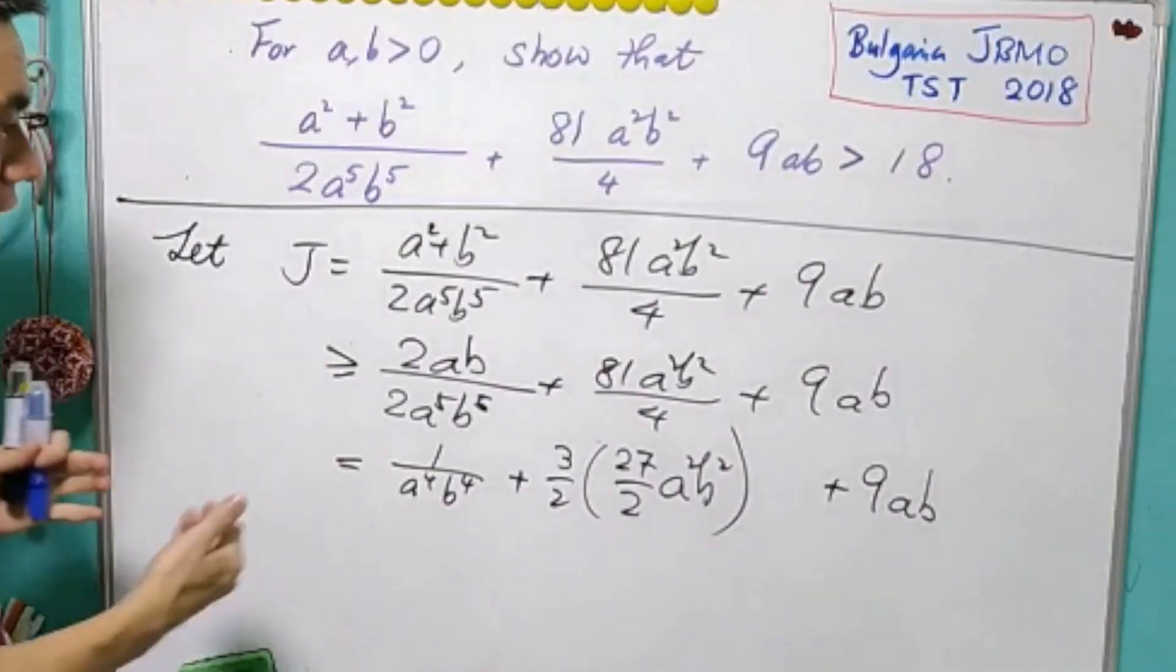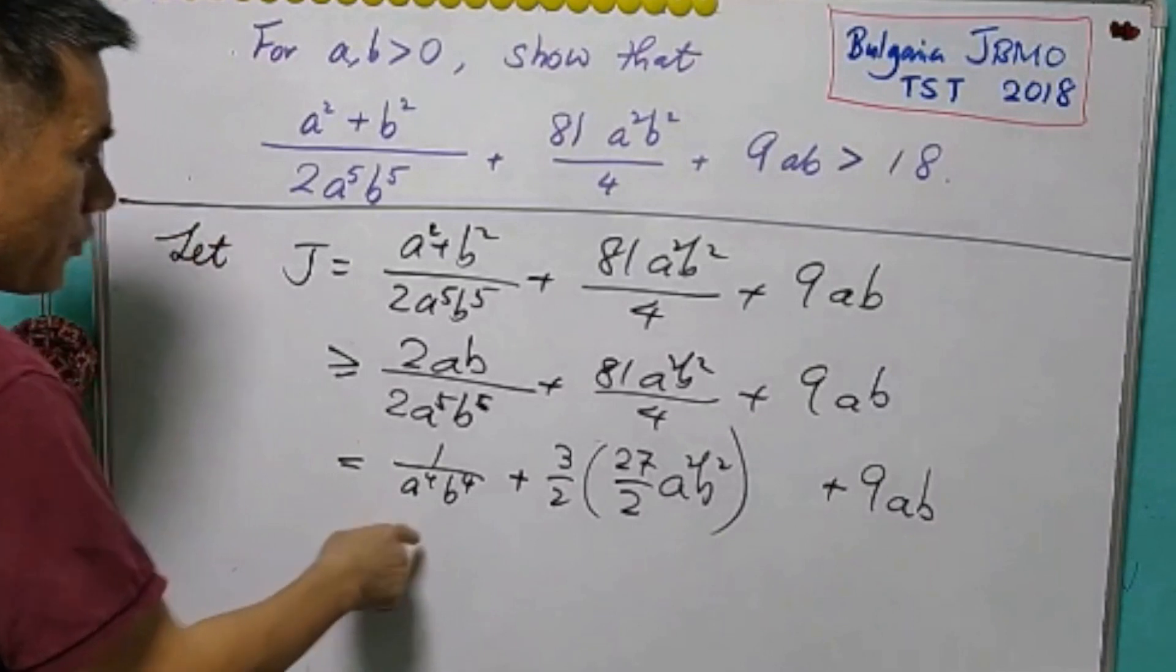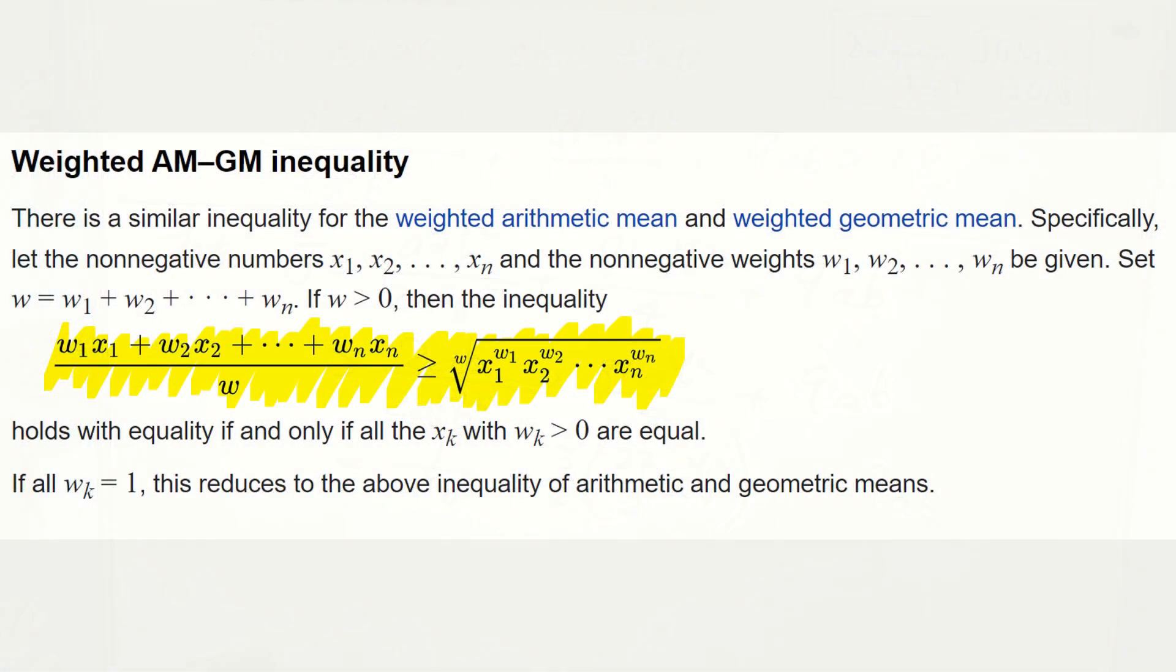For the first half, we use AM-GM inequality. And for now, we are using the weighted AM-GM inequality. And note that the coefficient of this term is equal to 1. The coefficient of this term also equals to 1.